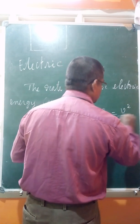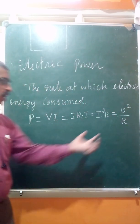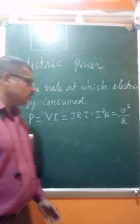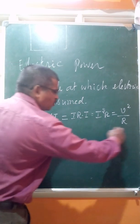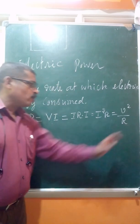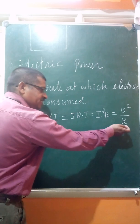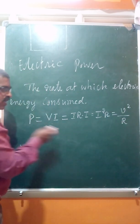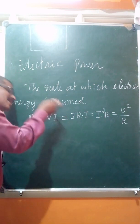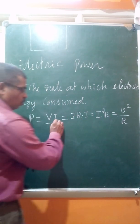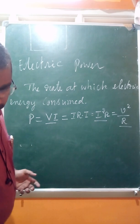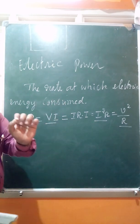Another formula is P equals V squared by R. So there are three formulas to calculate power: P equals VI, P equals I squared R, and P equals V squared by R. If potential difference and resistance are given, use P equals V squared by R. All three are related to power, and the unit is Watt.